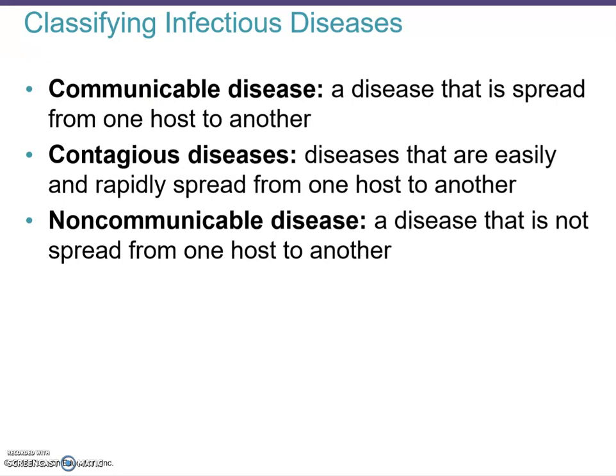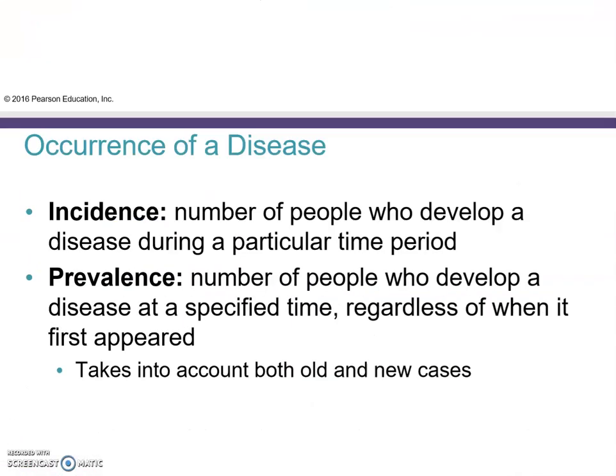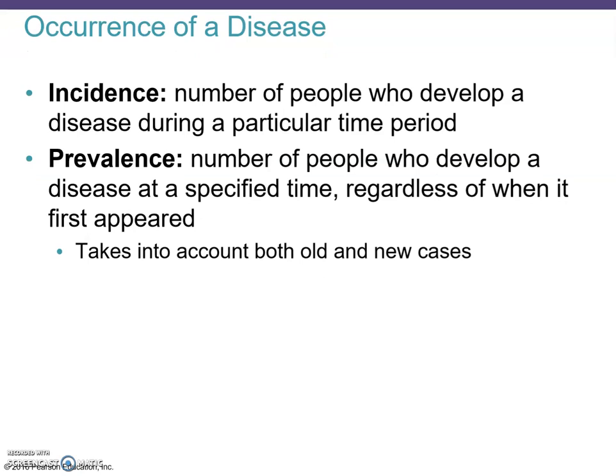More terms: a communicable disease is spread from one host to another — COVID-19 is a good example. Contagious diseases are easily and rapidly spread from host to host, again like COVID-19. Non-communicable infectious diseases are not spread directly from host to host — West Nile virus is an example, since you get it from a mosquito but cannot spread it directly human to human. Finally, incidence is the number of people who develop a disease during a particular time period, while prevalence is the number of people with a disease at a specified time regardless of when it first appeared.